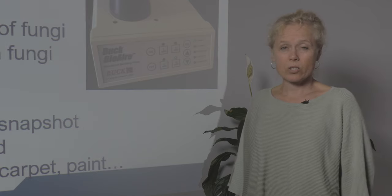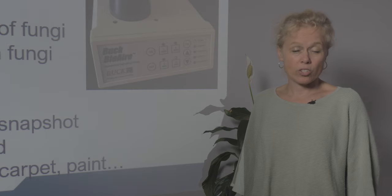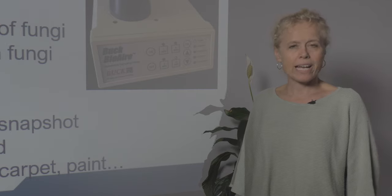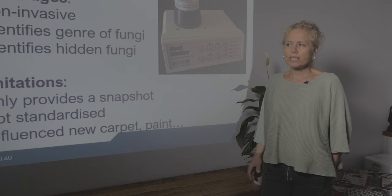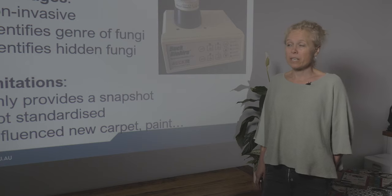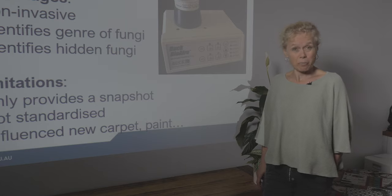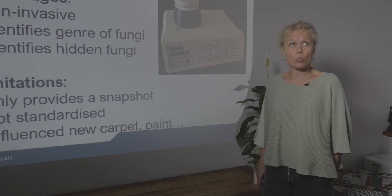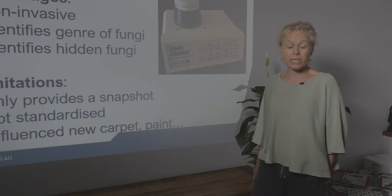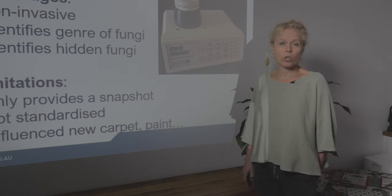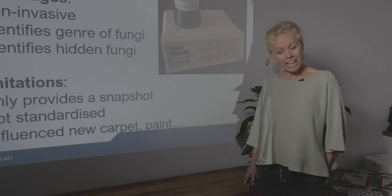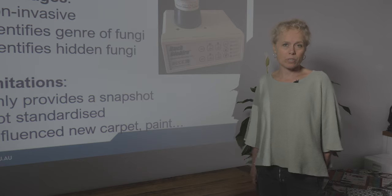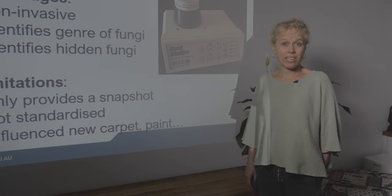The advantages of air sampling: it's non-invasive and easy to do. It identifies the genus or type of fungi and identifies potential hidden mould. If I take an air sample and I can't see any mould or damp odour, moisture mapping was unremarkable, but the air sample came back high in the thousands — Aspergillus, Penicillium, Cladosporium, or Chaetomium — then I know there's something going on in the walls, roof, or subfloor. That means destructive testing is needed, and you may need to go back and do more testing.